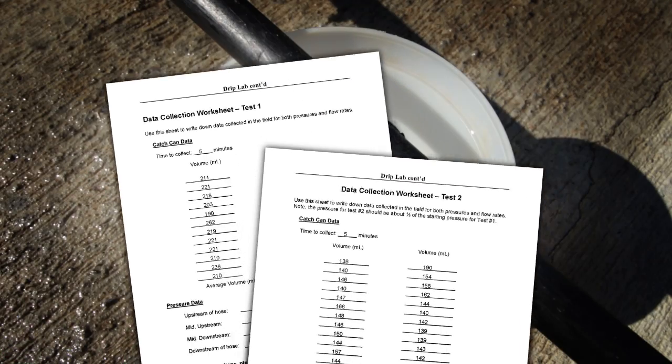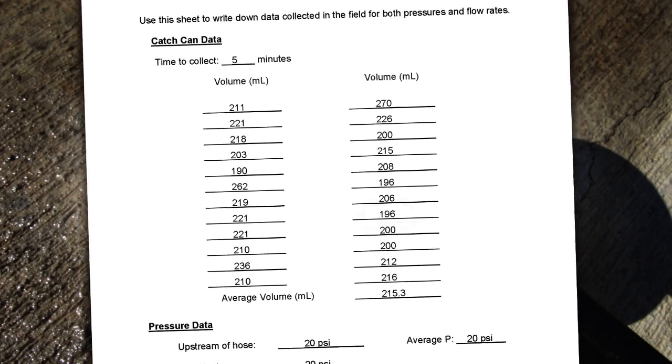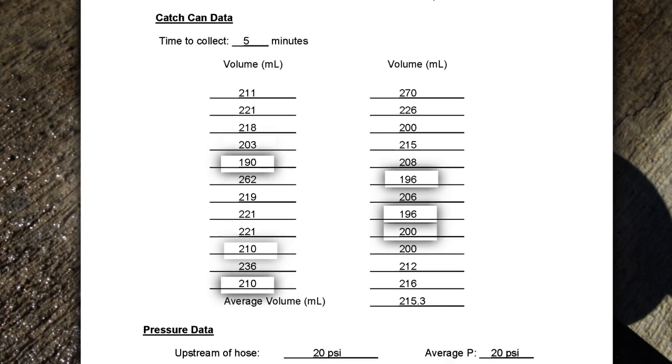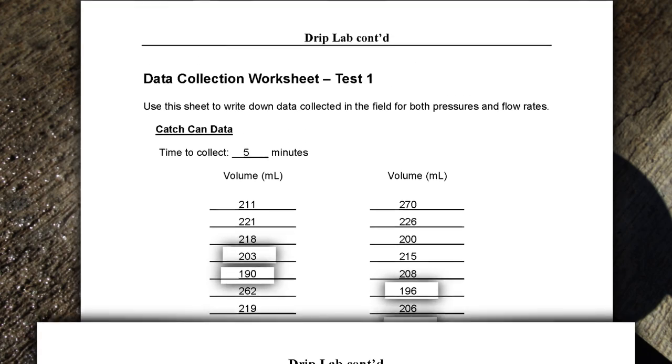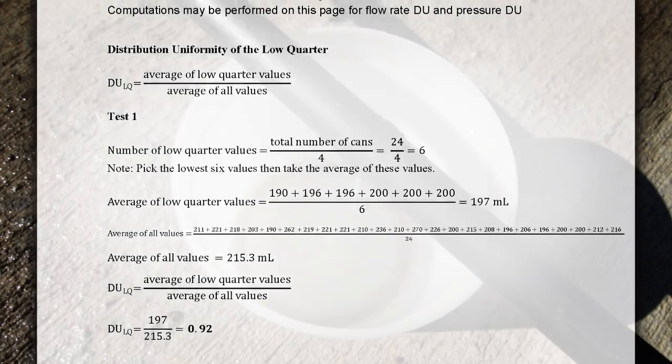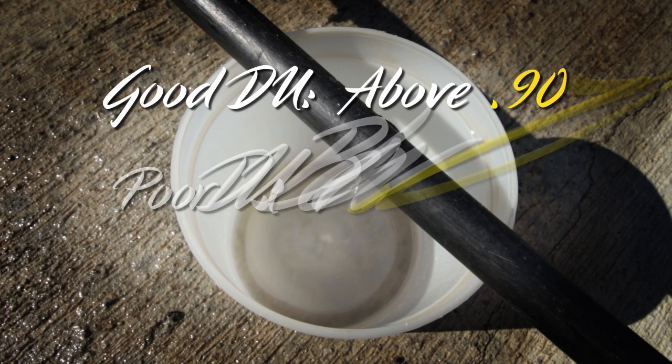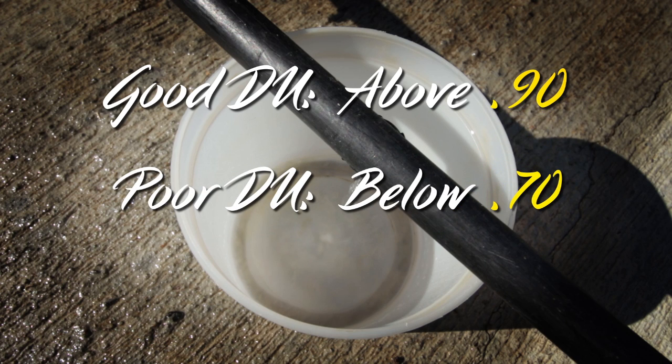This data is summarized by averaging the amount of water collected in all cylinders. The lowest quarter of the volumes is separated and averaged. The DU is calculated as the low quarter average divided by the overall average. A good value is above 0.90 and a poor DU is under 0.70.